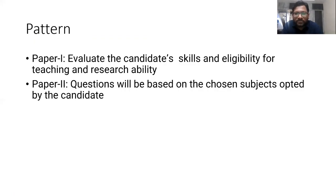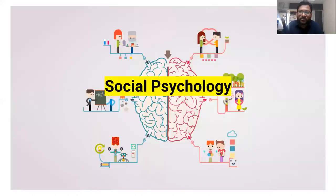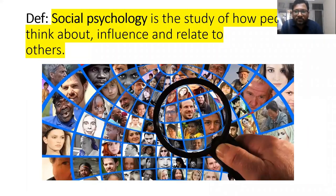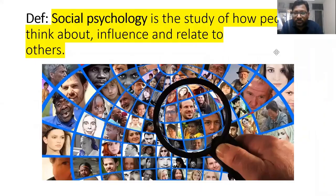We begin with social psychology, that is the 8th unit, which is one of my favorite topics. Social psychology is a psychology which deals with how people think about, get influenced by, and relate to others. Because we are social beings, how we think and get influenced, and how we relate to groups, social groups, cultures — ethnicity, different social backgrounds.